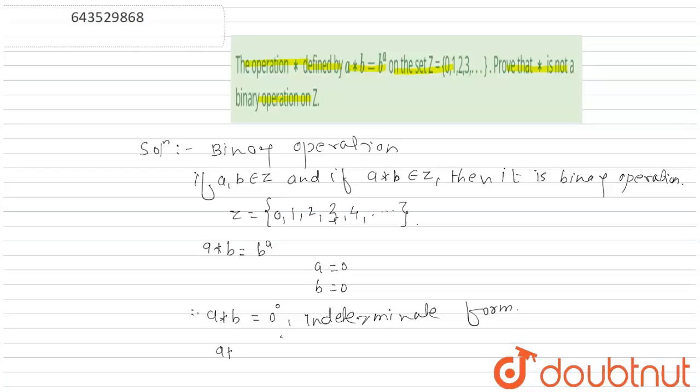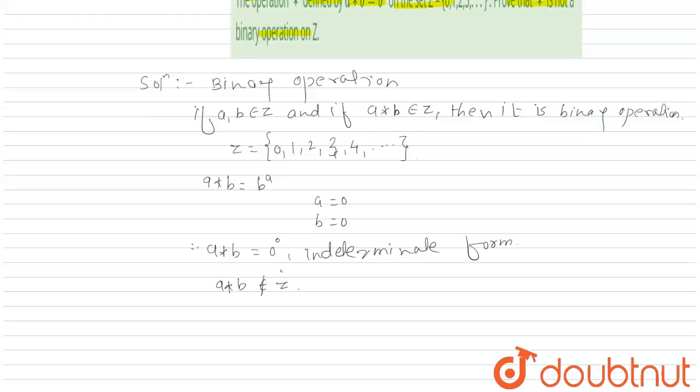That means a star b does not belong to Z, and therefore star is not a binary operation.